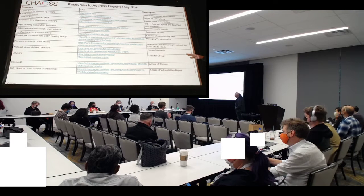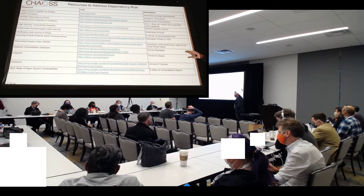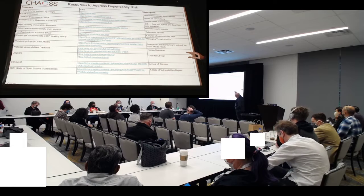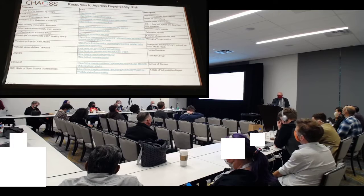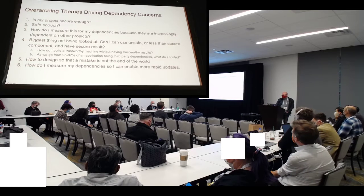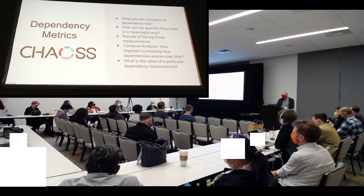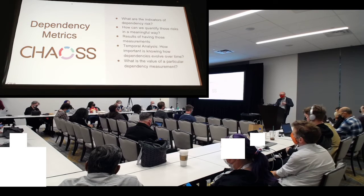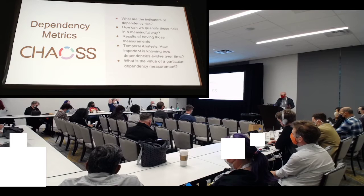Each of these links, which are available in the slides, is one way of approaching dependency risk in open source software. We sifted through all of those and came back to these questions to define what are the indicators of dependency risk, how can we quantify them, what can we measure, does time matter — in some cases it does, sometimes it doesn't — and what's the value of any particular dependency metric?